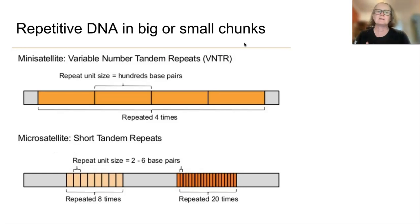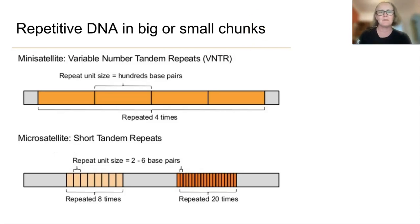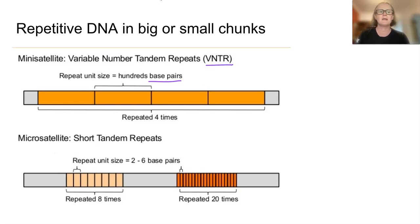We have two different types of repetitive DNA: repetitive DNA that occurs in big chunks and repetitive DNA that occurs in small chunks. The key difference between them is how many base pairs are involved in the repeat unit. If it's big — with hundreds of base pairs in each repeat chunk — it would be called a VNTR, a variable number tandem repeat.